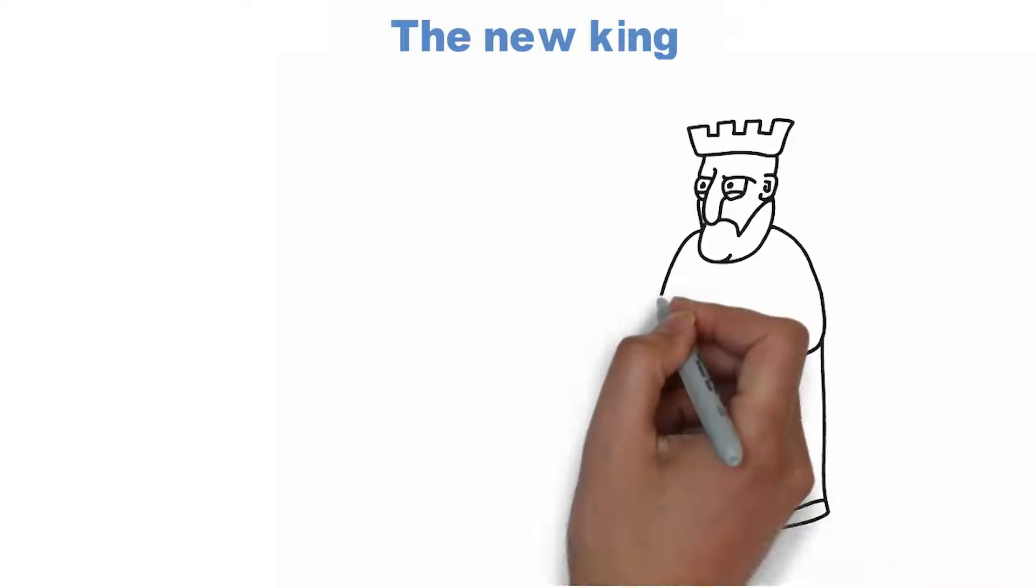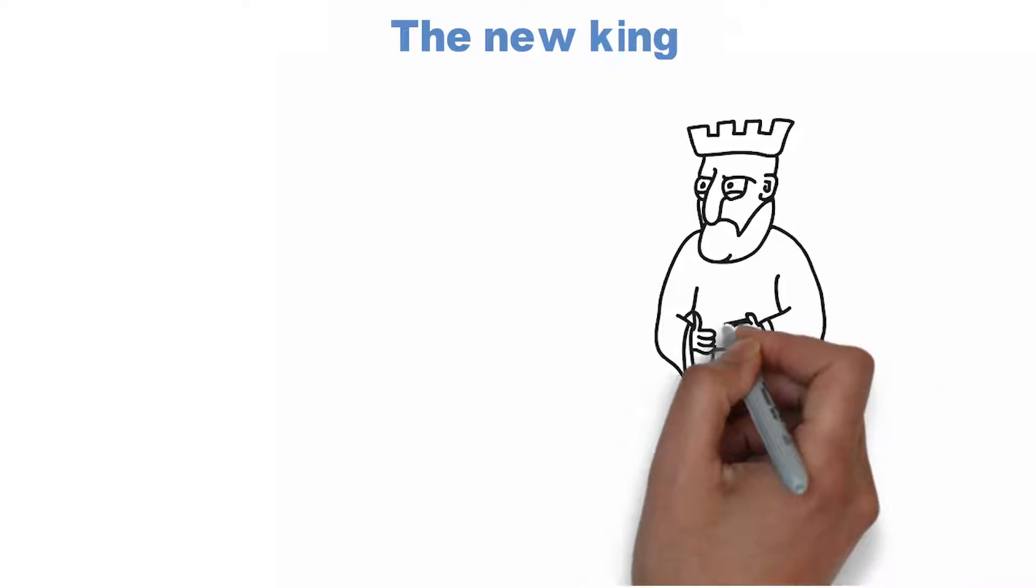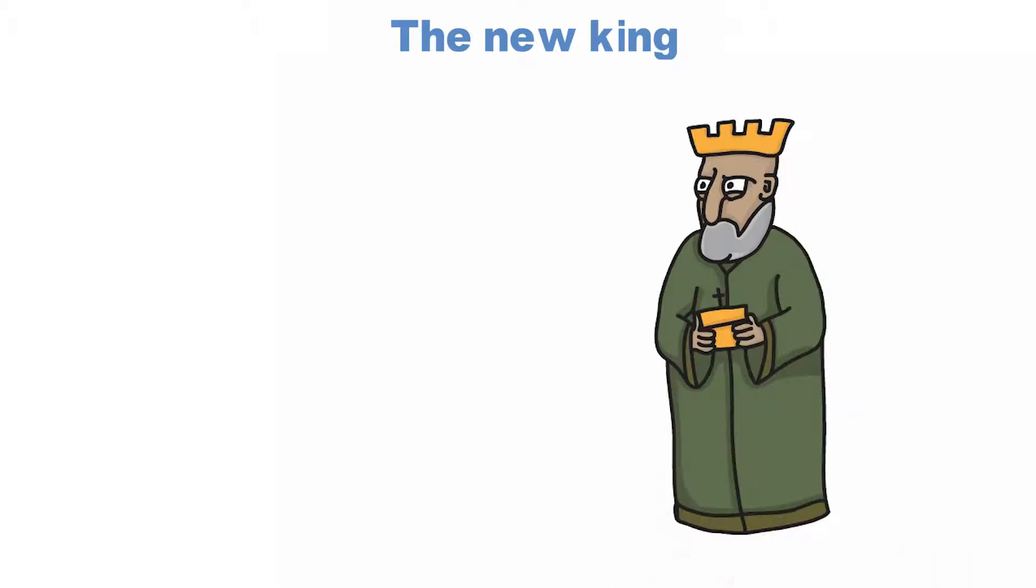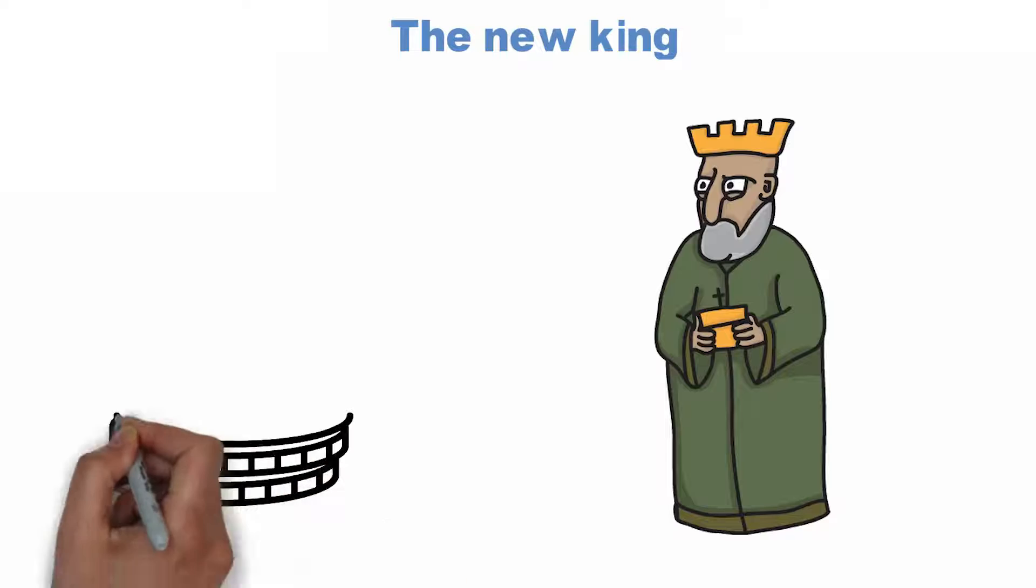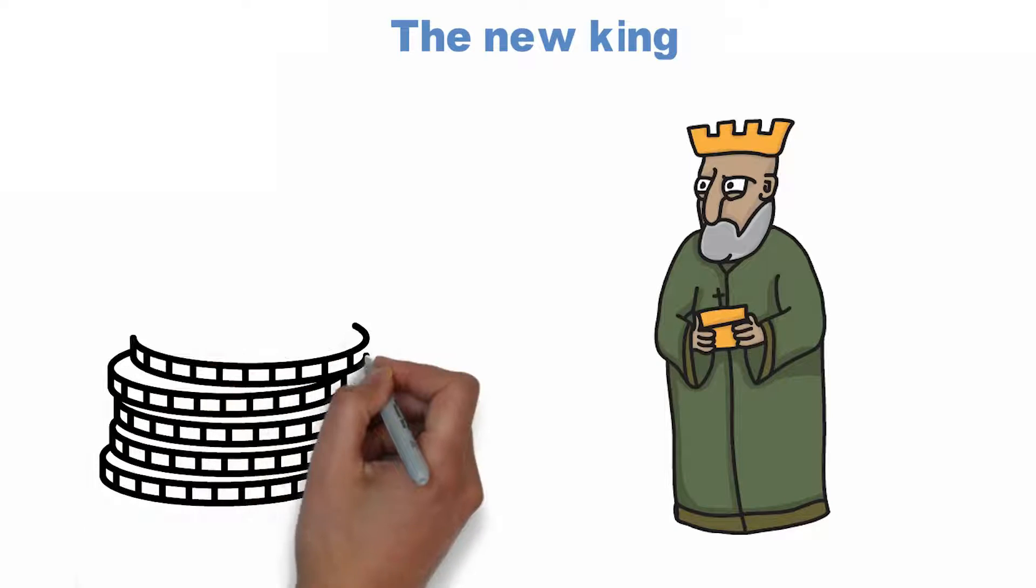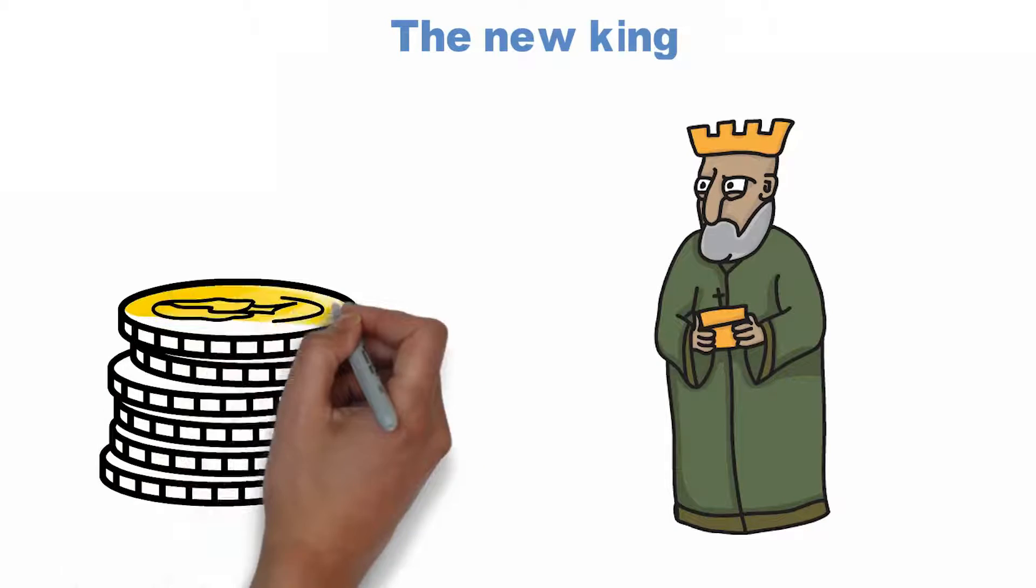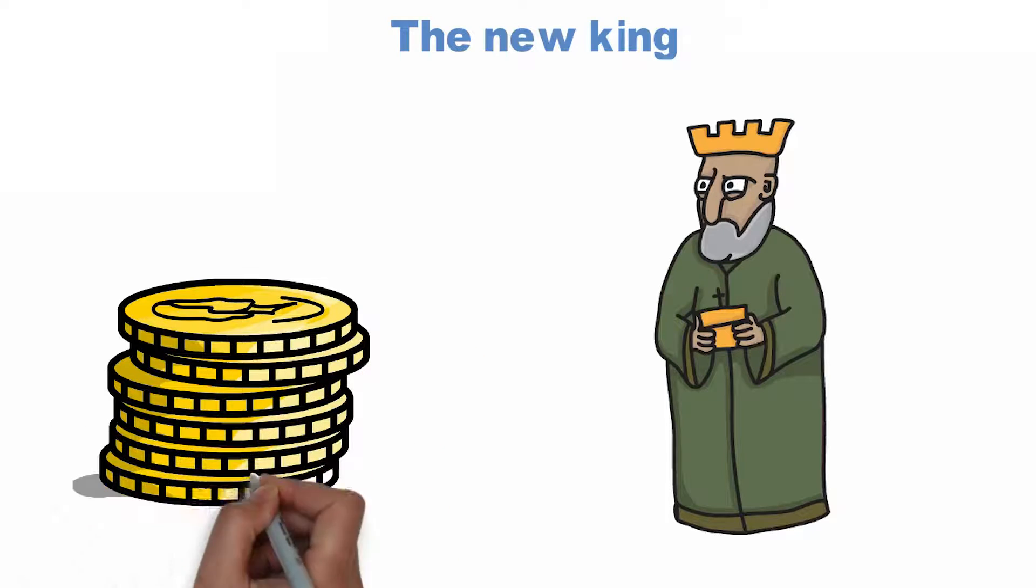The new king came to the city to rule over them. He was a very cruel king. He loved money more than anything. He started torturing the people of the city. He snatched money from them. He implemented new taxes on them.